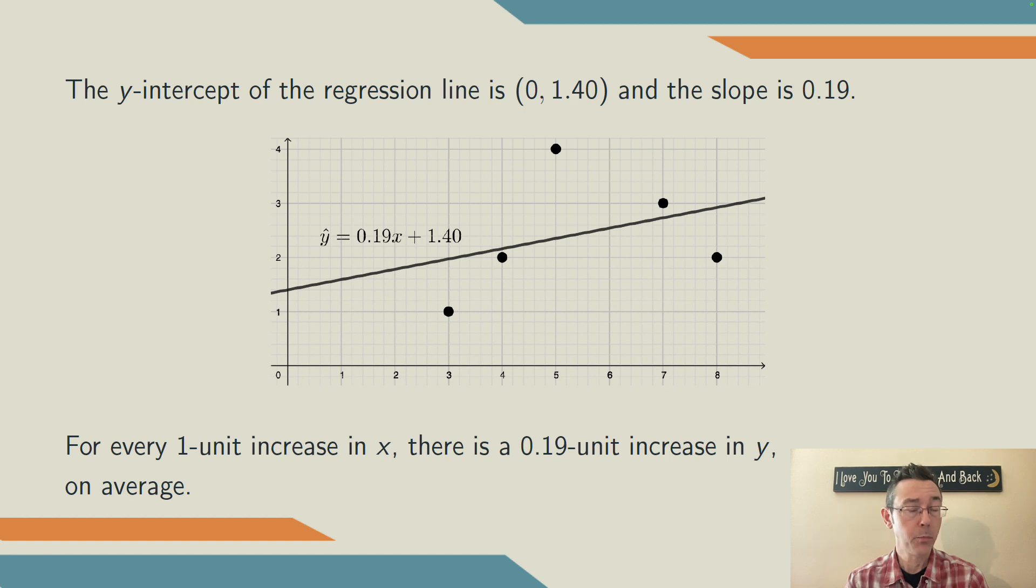Let's wrap up by making sure we're properly interpreting those coefficients that we're getting out for our regression equation, starting with the intercept. That's referring to the y-intercept, the y-value that you get when x equals 0, the place where the regression line intersects the y-axis. In our example, that point is (0, 1.40).